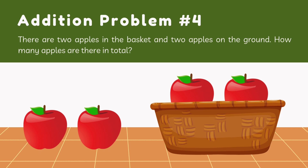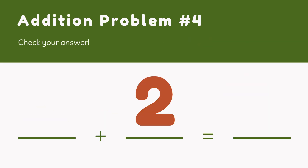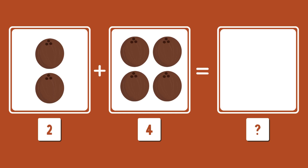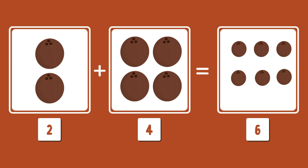I have got another addition problem for you. There are two apples in the basket and two apples on the ground. How many apples are there in total? The right answer will be two and two more will make four apples. Good job. Now tell me — if I have two coconuts on the left and four coconuts on the right, how many coconuts do I have? The right answer is six. I have got six coconuts!